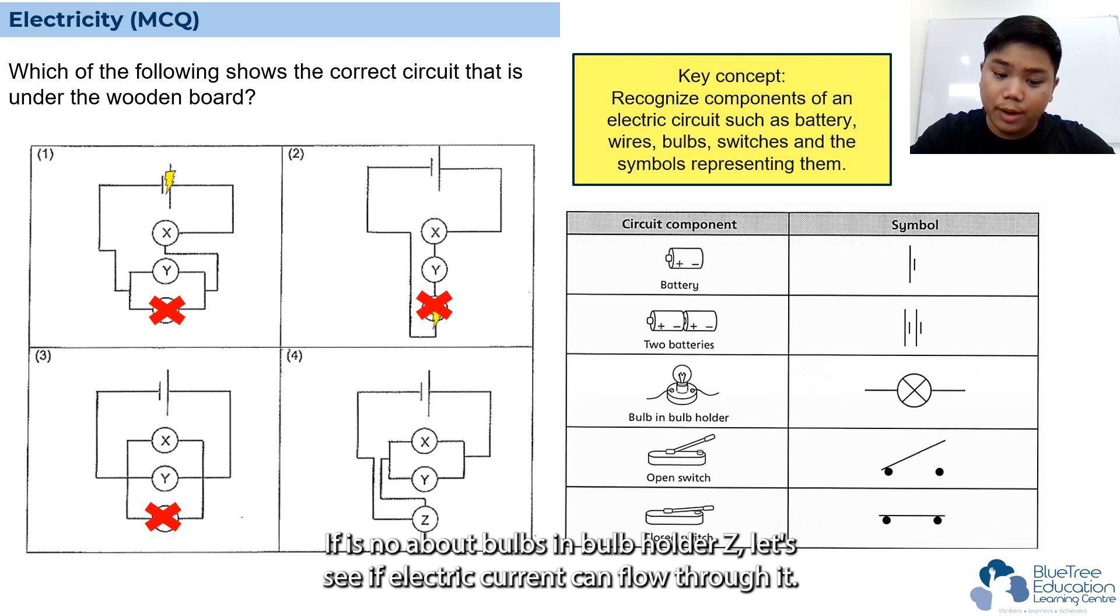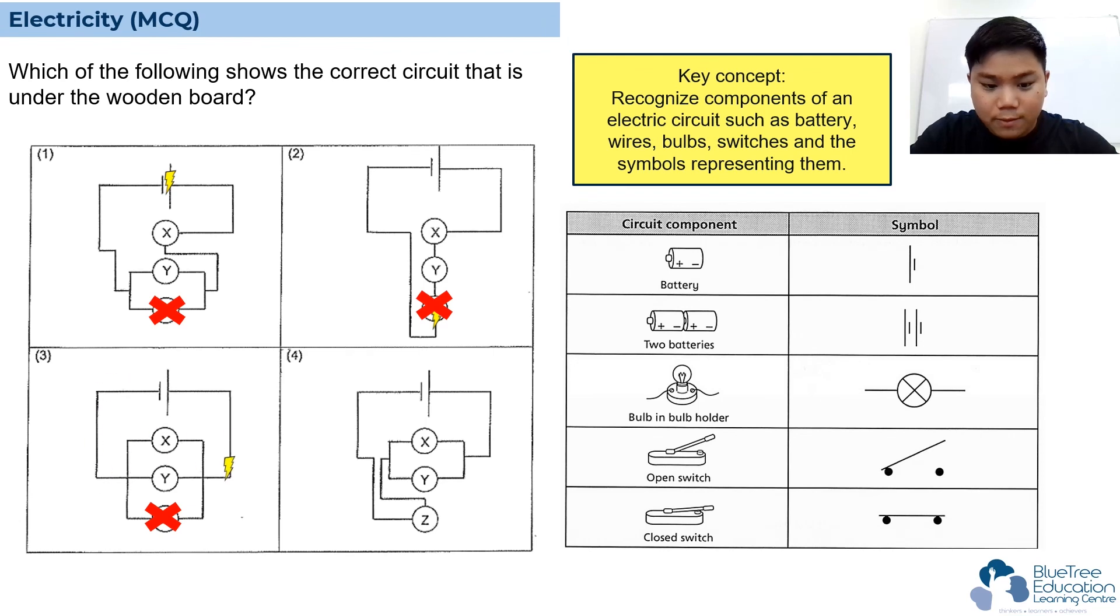Now let's look at option three. If there's no bulb in bulb holder Z, can electric current flow through it? Yes, it can, so option three is out.